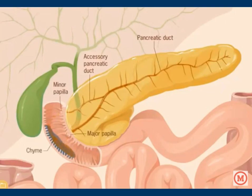In order to protect the pancreas, protease is released in an inactive form and is activated once it reaches the duodenum. Bicarbonate within the juice acts to neutralize the acidic chyme, which creates a favorable environment for the digestive enzymes to function.